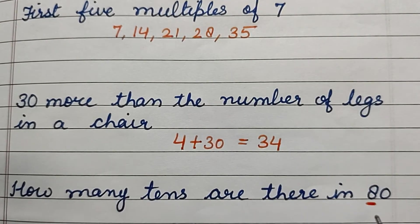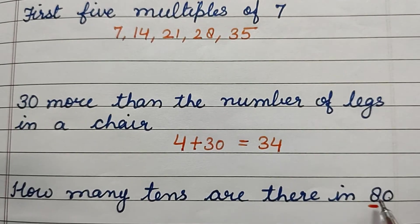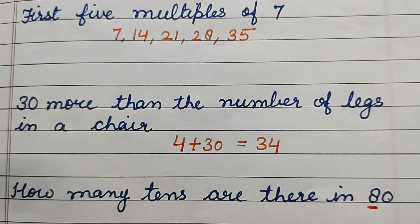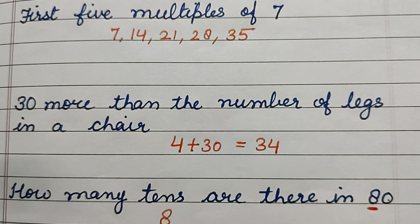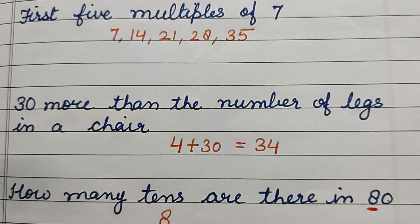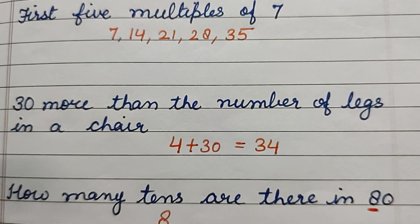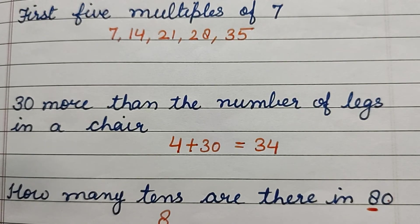The next question is: how many tens are there in 80? We can see that in 80, the digit 8 is in the tens place, so the number of tens is 8. That's all for today — we will meet in the next video with some more interesting questions. Till then, bye!